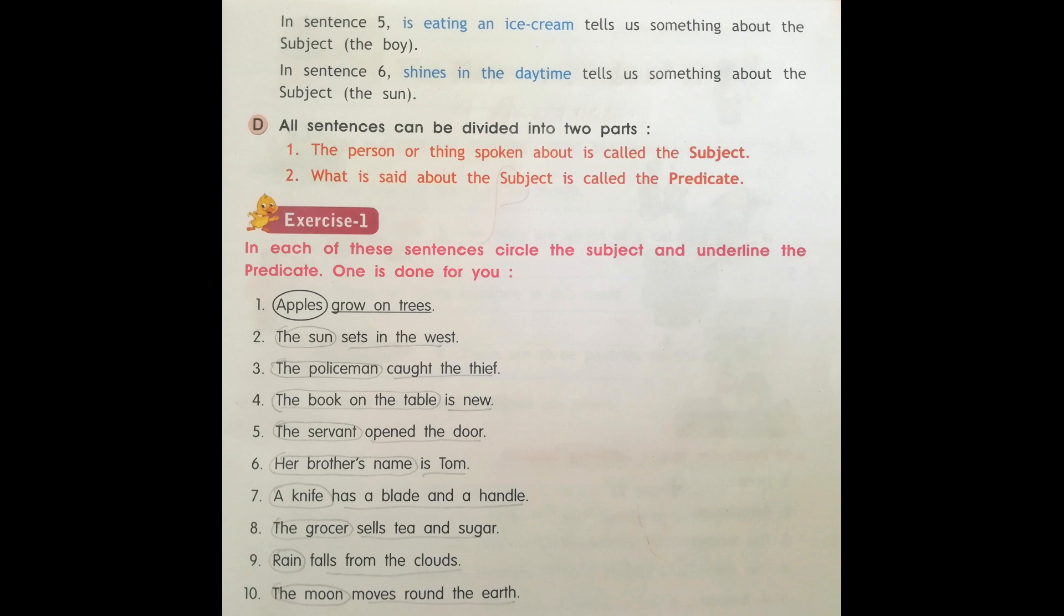Now let us do exercise 1. In each of these sentences, circle the subject and underline the predicate. One is done for you.